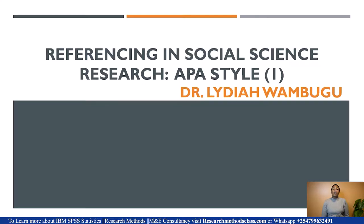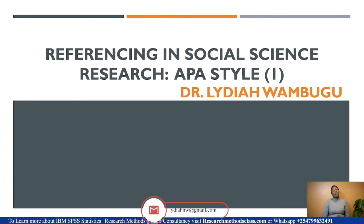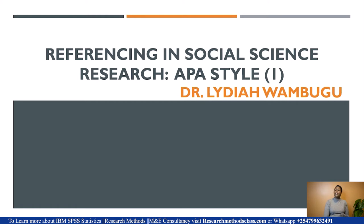Welcome to our lesson today. We are going to start discussing references in social science research. We will title our lessons 1, 2, 3, and 4 because we will have various components of referencing to discuss. Today we are going to look at the differences between the 6th edition and the 7th edition of the APA.